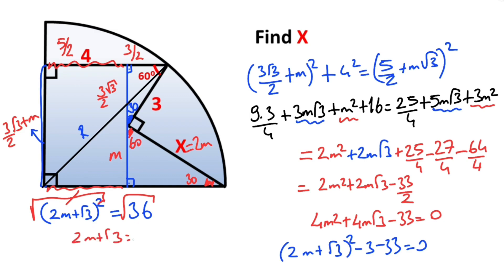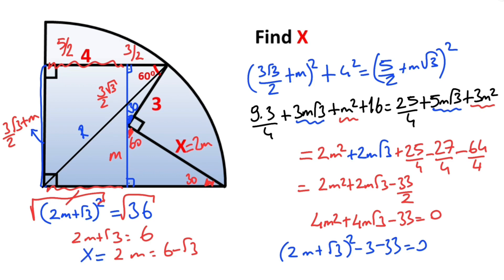So 2m + √3 = 6, which means 2m = 6 − √3. We know that x = 2m, therefore x = 6 − √3. Thanks for watching, and if you want more videos like this please subscribe to my channel.